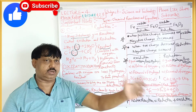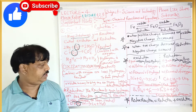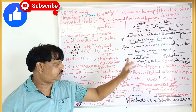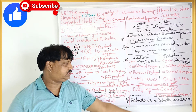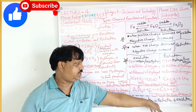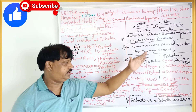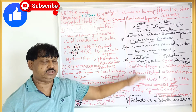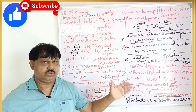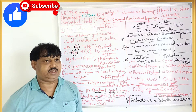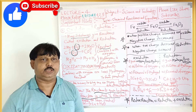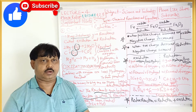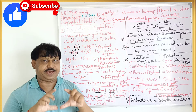Uska example maine yahan pe likha: BaSO4 + 4C → BaS + 4CO. Ismein reduction bhi hai, ismein oxidation bhi hai, dono ek saath hain. Such type of reaction in science is called a redox reaction. Yaad rakhiye.